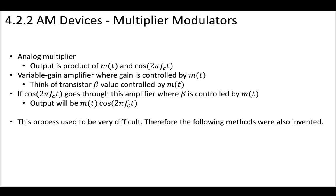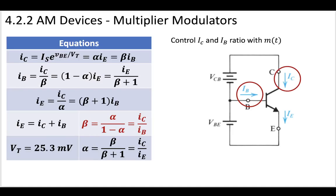If you want to think more about the multiplier modulator as you might implement it today, you could recall a BJT circuit with a large series of equations, including the beta value, which is a ratio between two different currents. If you can control those currents — or the associated voltage — with your message, you can effectively multiply a cosine wave by your message. This is an easy way to do it now, but in the rest of the videos we'll see some more classic, quite clever ways to multiply your message by a cosine wave.